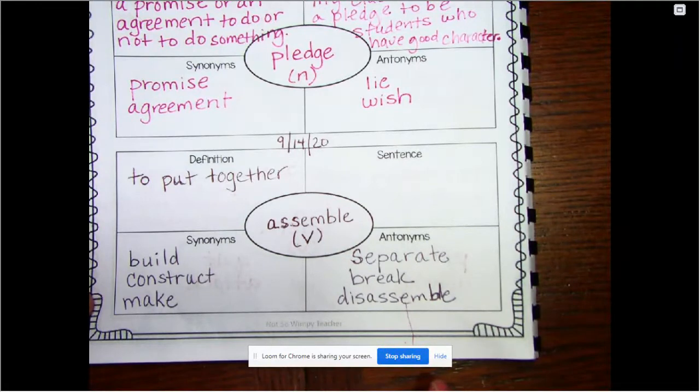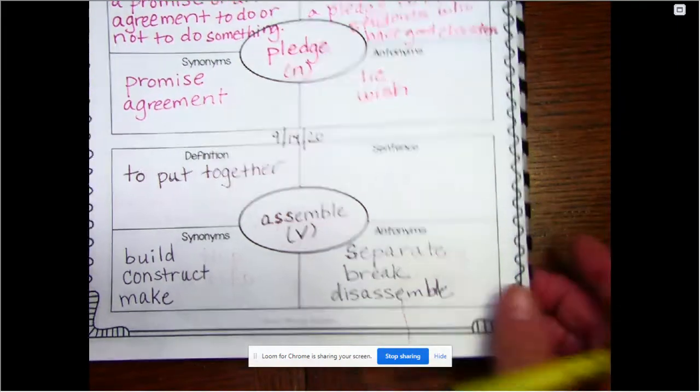Then Thursday we'll do our wild words in our picture dictionary, and then Friday we have a test over the last ten words that we've done. So if you have everything written down, you'll be able to use your book on that test.